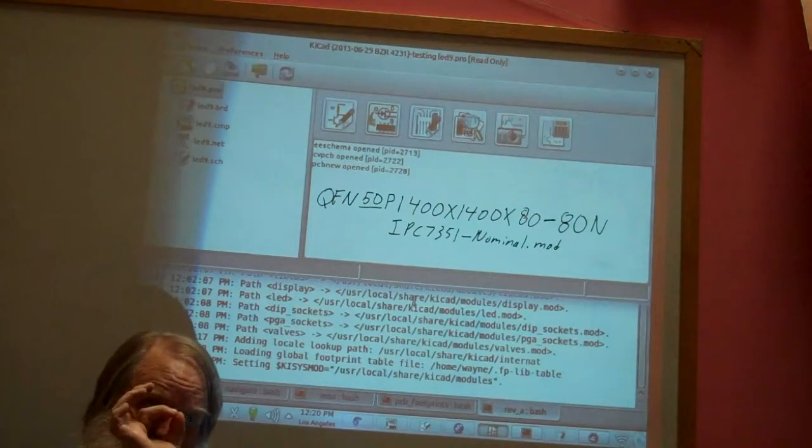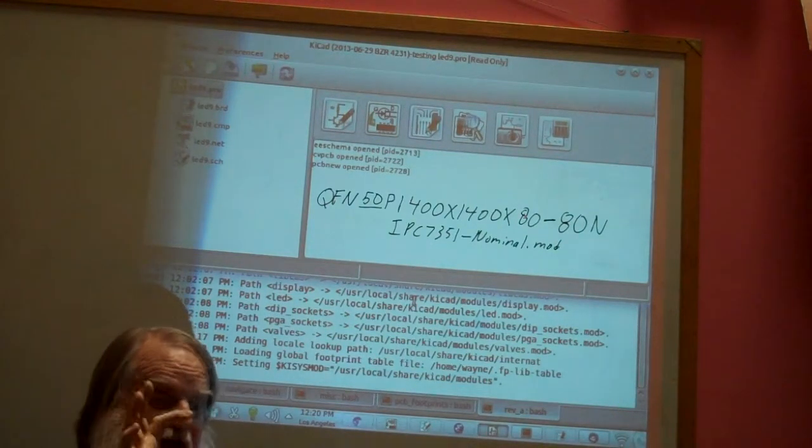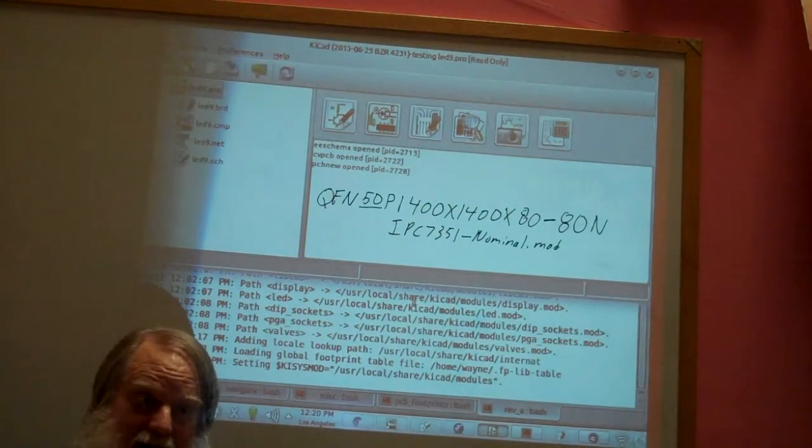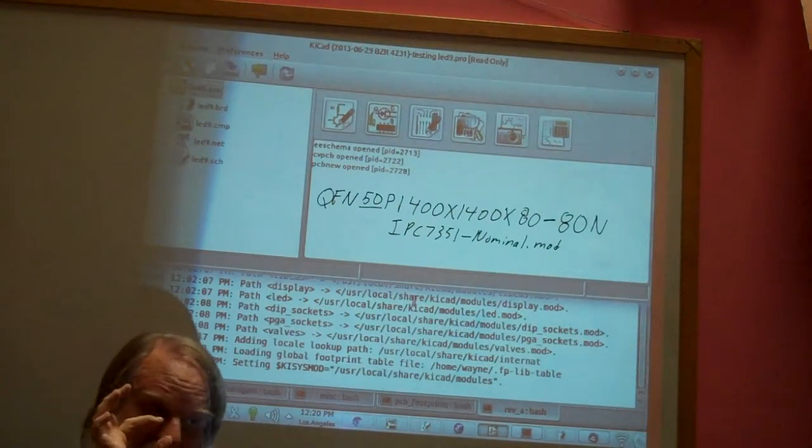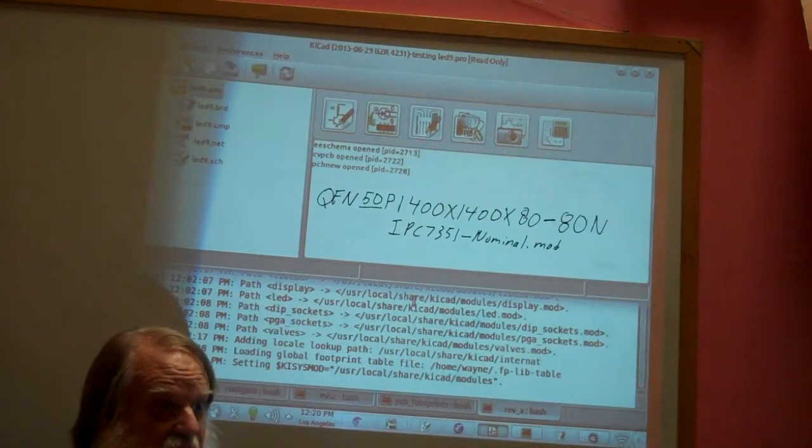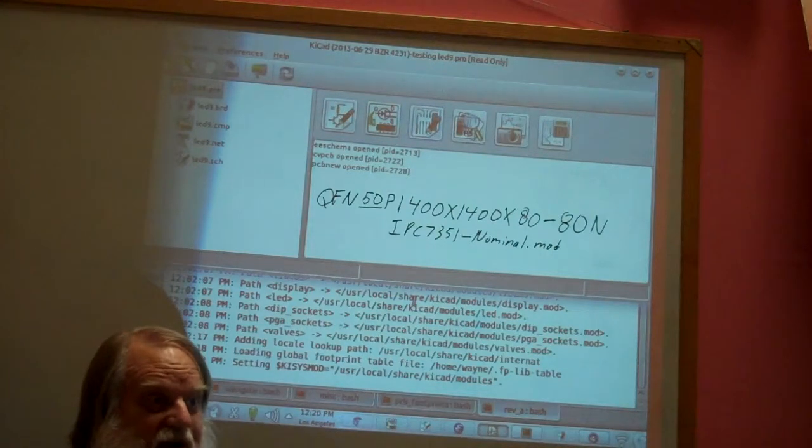But basically the nominal, least, and most is an area of the pad. Basically they're saying the aerospace industry really wants high reliability, so they go for the wider pads. And the cell phone folks, they don't want anything extra. They're willing to take a slight reduction in yield to get extra millimeters of space on their cell phone.